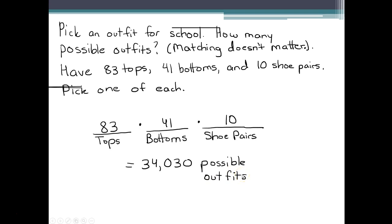So next time somebody tells you they're trying to get dressed and they take forever, cut them some slack — think about how many possible outfits they have to choose from. My son wears a school uniform: three polo shirts in different colors, two pairs of shorts in different colors, same socks and shoes every day. So for him it's three shirt options times two shorts options, which gives him six possible arrangements: teal-khaki, teal-black, white-khaki, white-black, black-black, black-khaki. Makes it much easier!